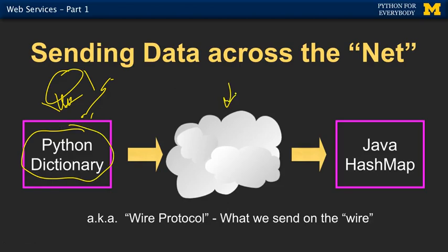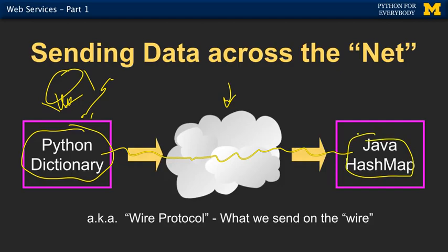We have worked out over the years what we call the wire protocol — how the data is put on the wire, how the data leaves one system, transits a network, and then enters another system. In that destination system it's not always Python; it could be another program. Our Python dictionary in the other system might need to be a Java hash map. So we can't say we're going to send Python data or Java data across the network — we just have to send data in some format that we agree on.